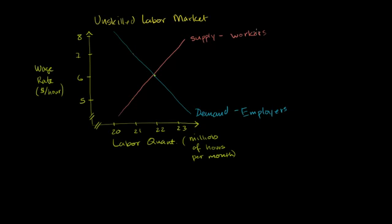So let's just say that this market starts off being completely unregulated. And so it has a natural equilibrium price or equilibrium wage at $6 an hour. And an equilibrium quantity of labor supplied, which is 22 millions of hours per month. But let's say the government in this hypothetical city or country says, you know what?